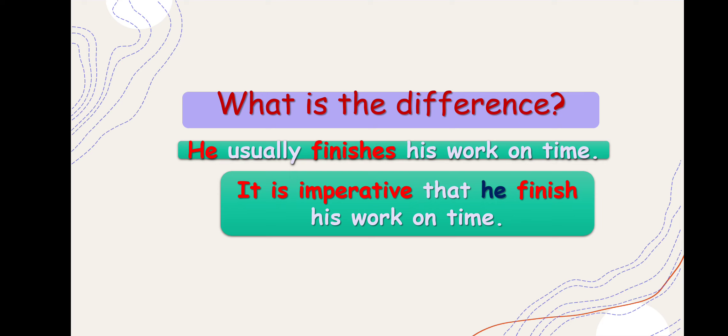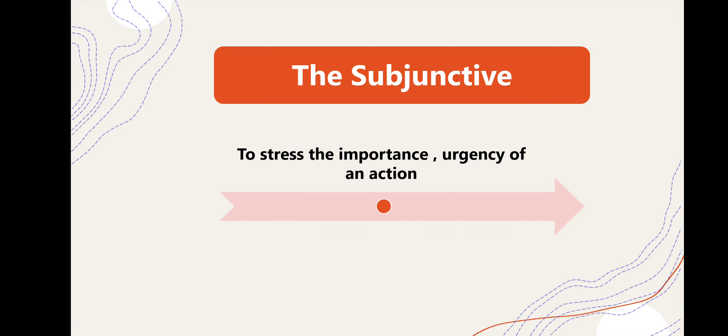يعني المفروض - الجملة الأولى: هو دائماً معتاد على إنهاء العمل في وقته، يعني هذه عادة، نستخدم المضارع البسيط. أي شيء معتاد على فعله روتيني نستخدم المضارع البسيط. لكن لو أبغى أؤكد على نفس الحدث، أقول 'it's imperative' - نبدأ الجملة بـ that he finish بدل finishes.